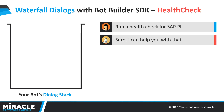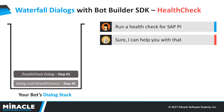In turn, step two of the same processor would start a new dialog — the health check dialog. In the health check dialog, step one would start off. Since the system is already identified, within step one there is another dialog called askSys, which would not be triggered since we know that the system is SAP PI.